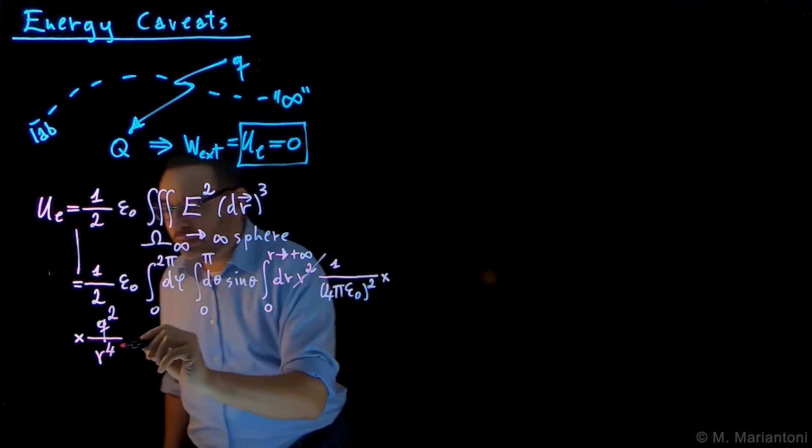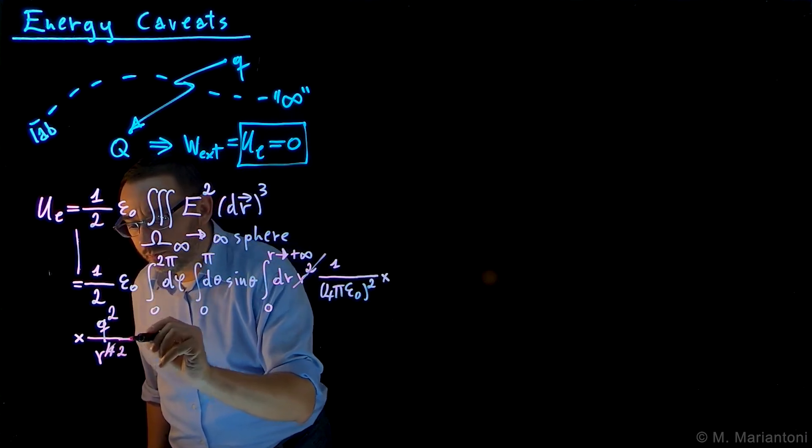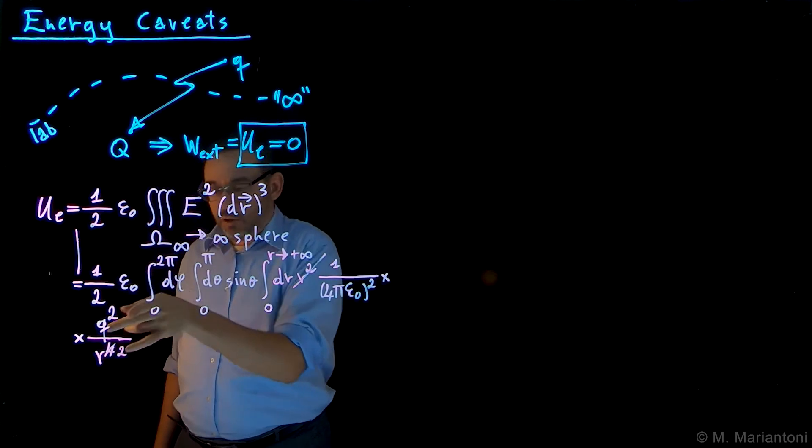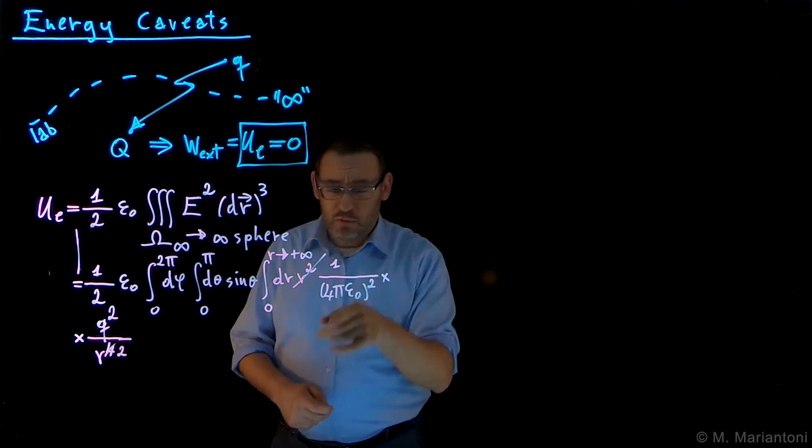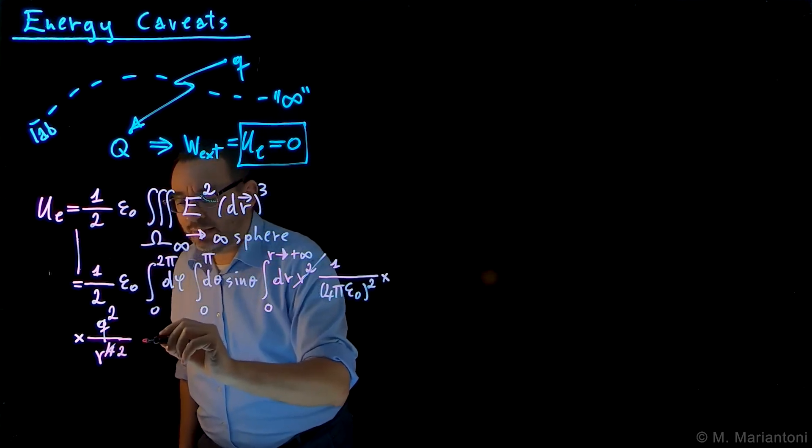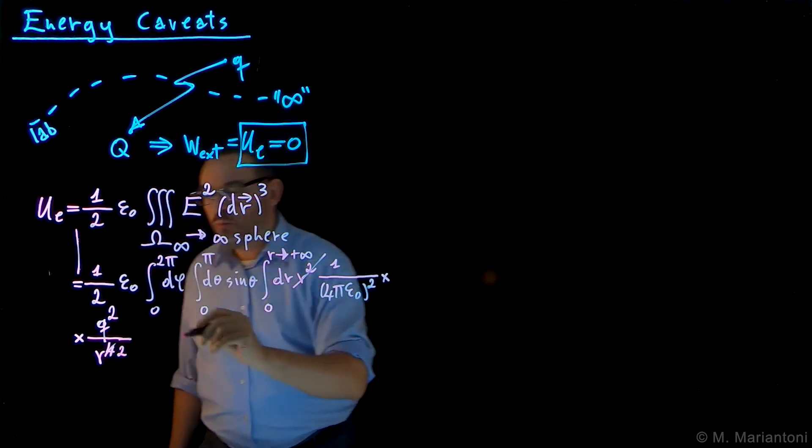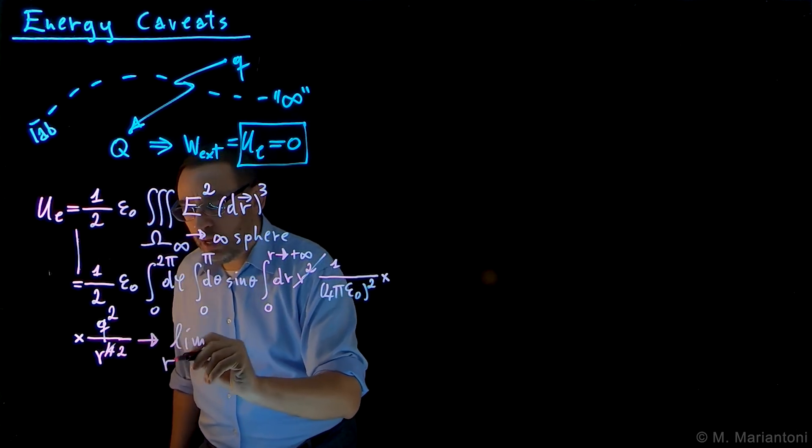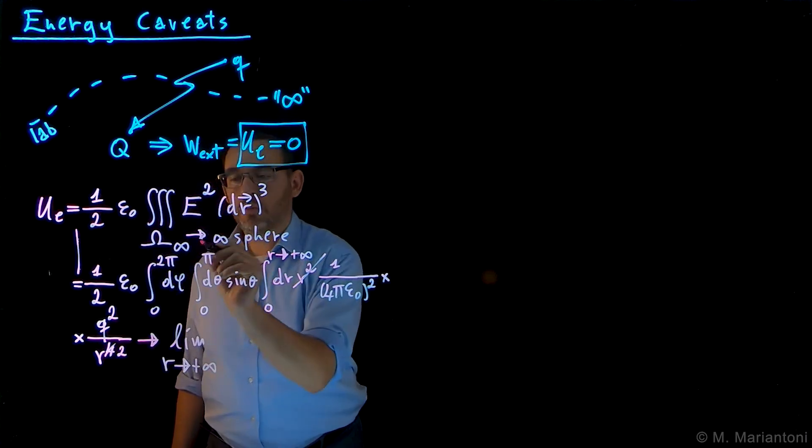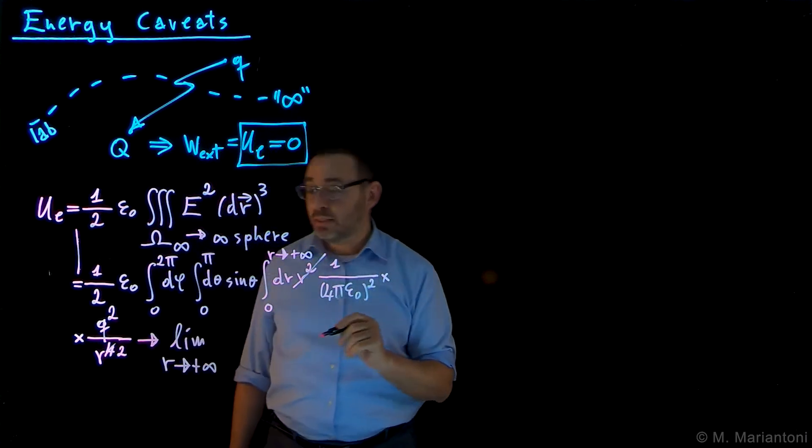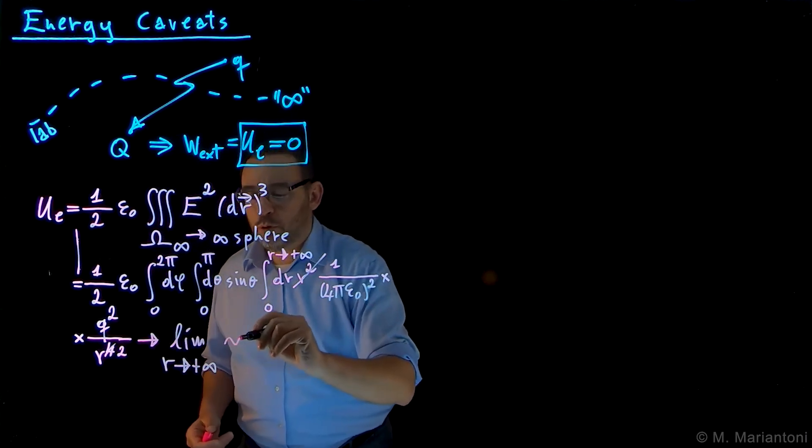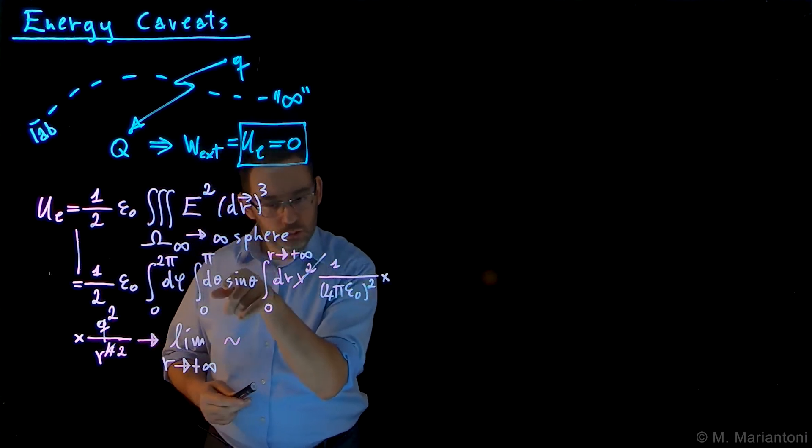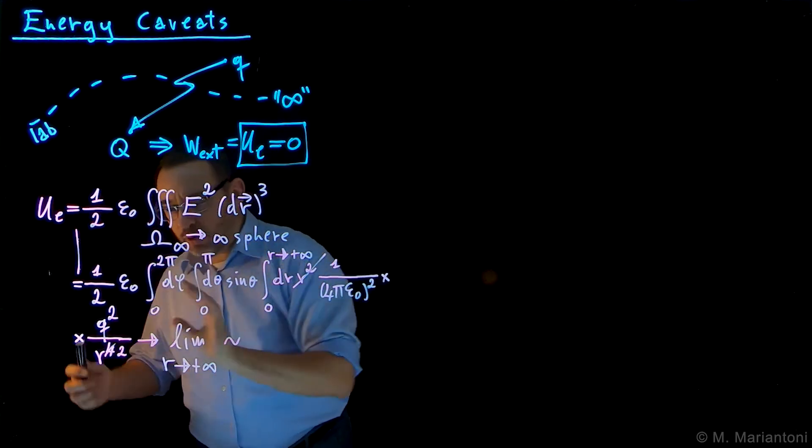So we can take care of this—this becomes power of 2. So these are all constants: 1 half epsilon naught, this gives me 2π, this gives me 2, so these are all—Q squared is a constant, 1 over 4π epsilon naught squared is a constant, which means this integral—now what we want to do, we want to go and calculate this integral in the limit for small r, which pushes to plus infinite, to obtain omega infinite, capital omega infinite.